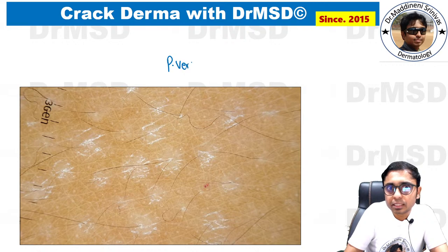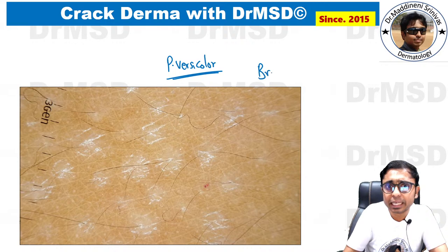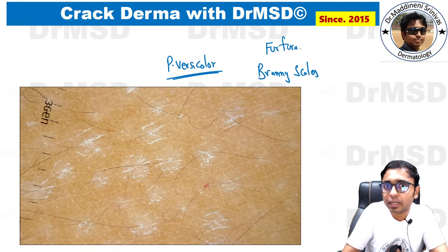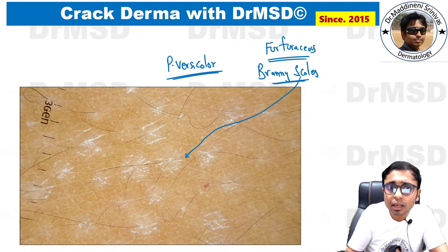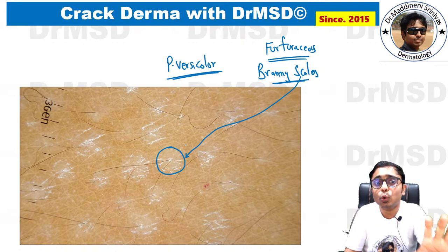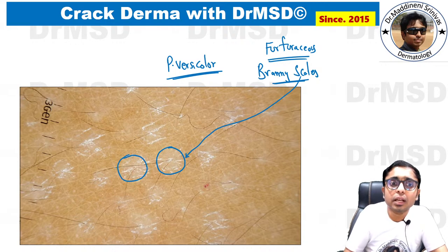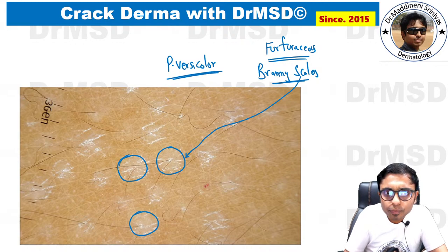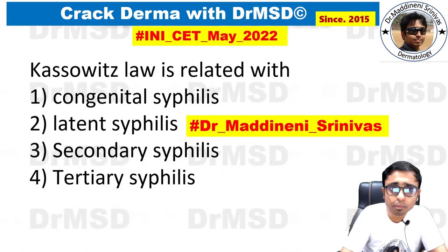In Pityriasis versicolor, earlier called Tinea versicolor, branny or pityriasiform scales are seen. You can observe hypopigmented macules arranged perifollicularly, and these individual perifollicular macules slowly coalesce with each other to form larger patches. That is the classical description of Pityriasis versicolor.